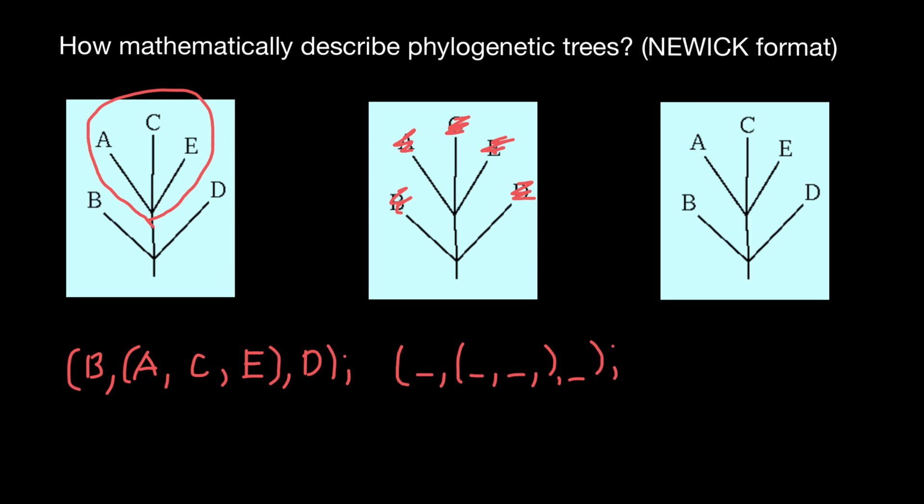What if, for example, you want to add genus and species name instead of just letters? Then instead of a letter, you just add genus, underscore, and species name. So they have to be separated by underscore, which stands for the blank space.